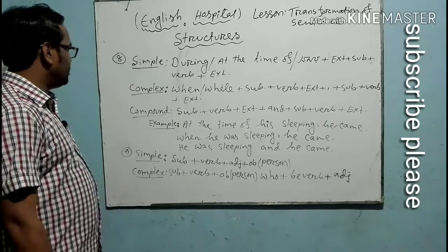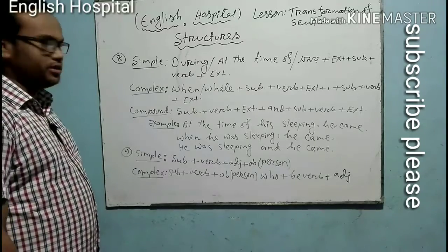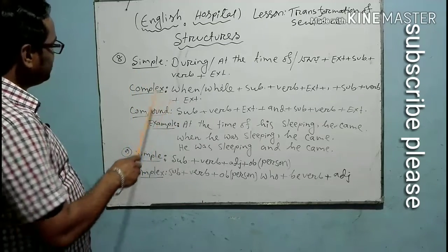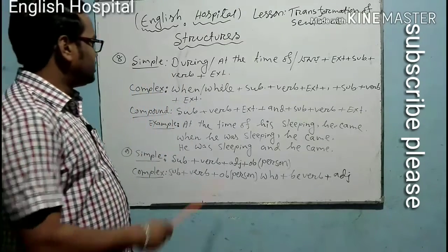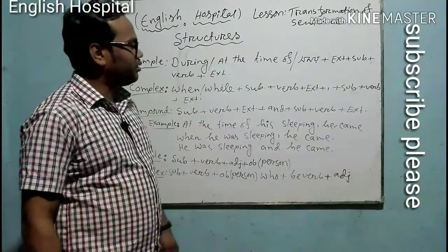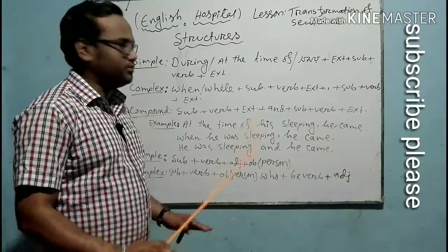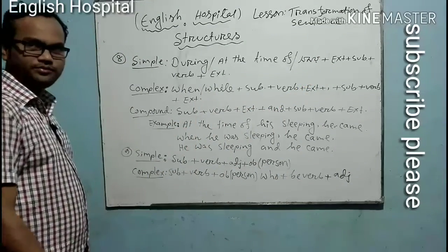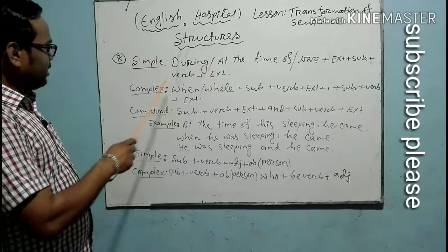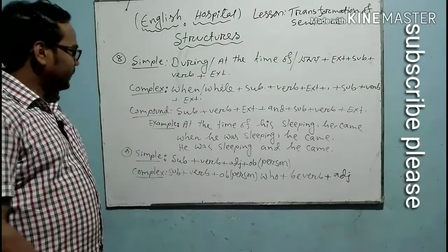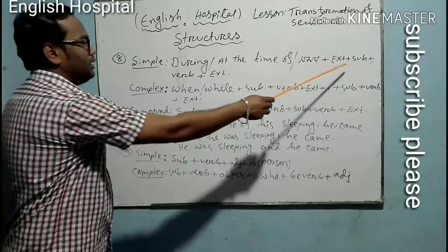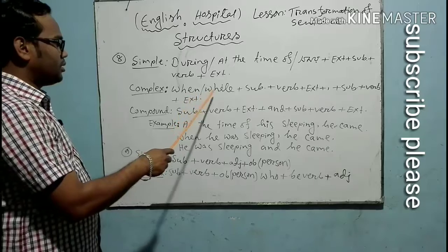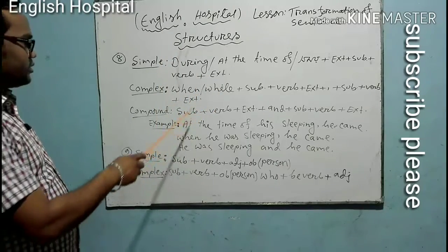I have already covered structure number seven. So today we look at structure number eight. In a simple sentence, if there is a time expression — such as 'at the time of' or any kind of time indicator — here is the pattern: subject, verb, extension.